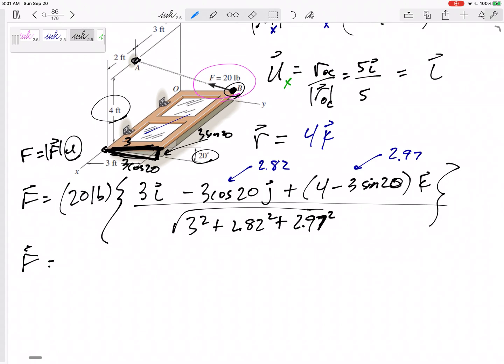Divide this. Let's see, three squared, two point eight two squared, two point nine seven squared, take the square root. All right, let's see if you got this: eleven point eight in the i, minus eleven point one in the j, plus eleven point seven in the k.